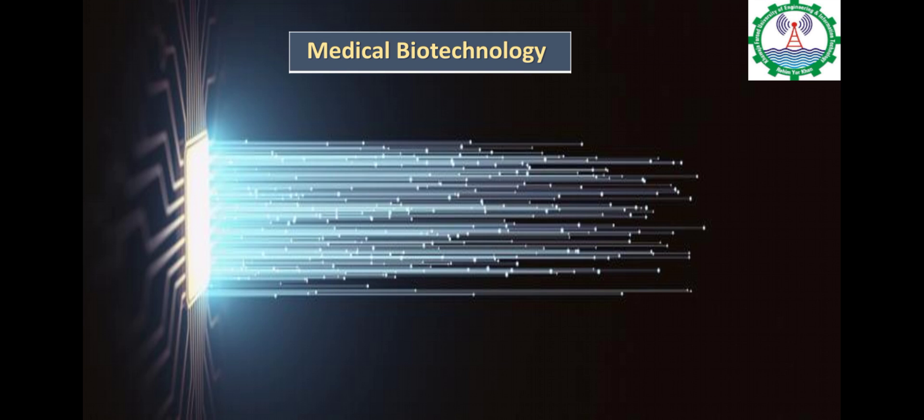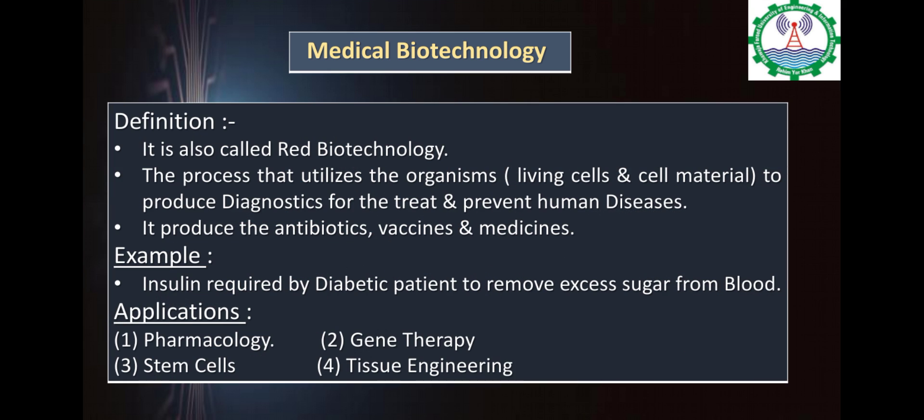What is medical biotechnology? We have studied about medicines like diagnostics, antibiotics, and vaccines. We have studied about disease and how to treat human diseases. If we talk about the definition, we can utilize organisms, living cells, and cell materials to treat human diseases. For example, insulin is the best example — diabetic patients' blood excess sugar is removed.